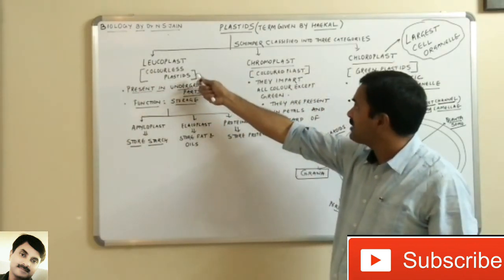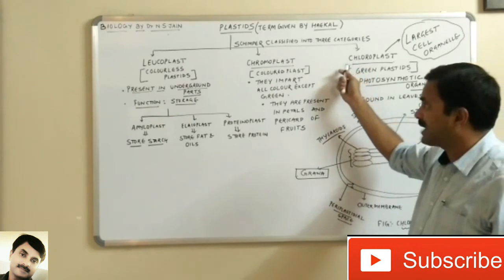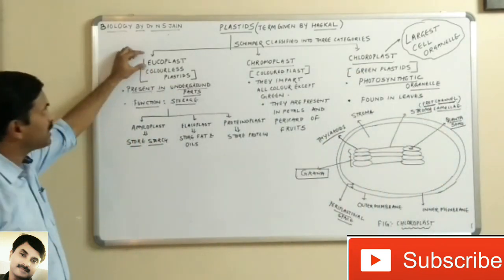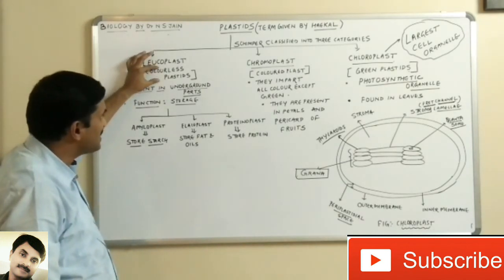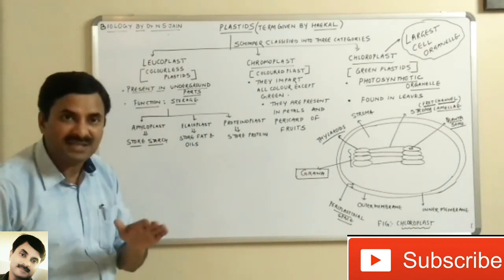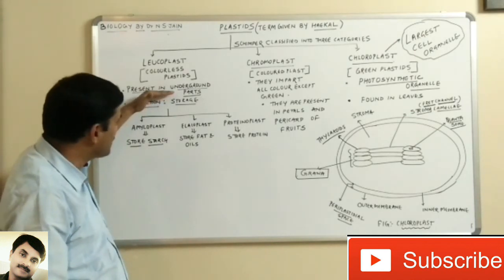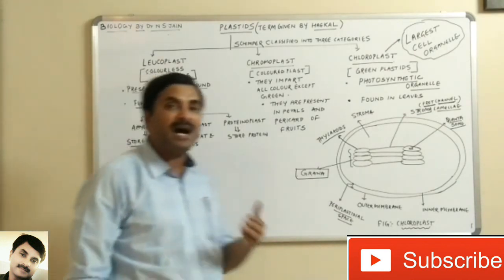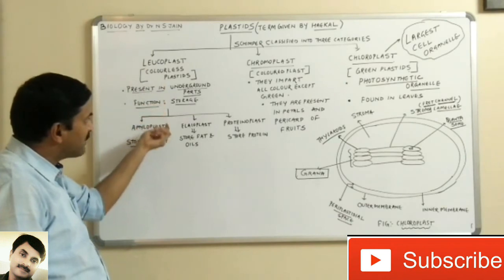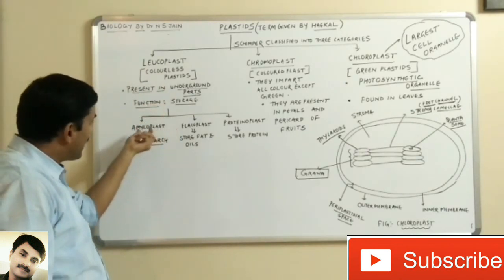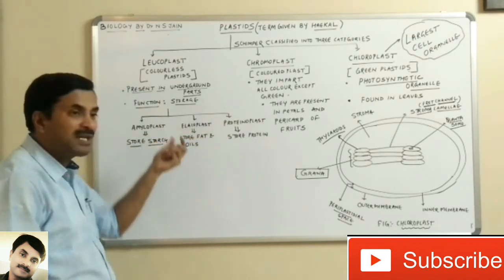The three categories are: the first is leucoplast, the second is chromoplast, and the third is chloroplast. The term 'leuco' means colorless, so leucoplasts are colorless plastids. They are not concerned with photosynthesis, they are present in the underground parts, and their chief function is storage.